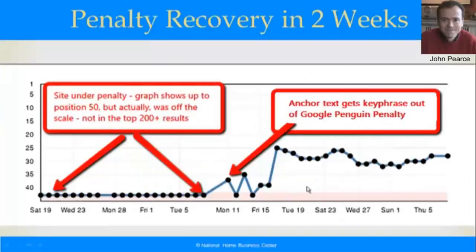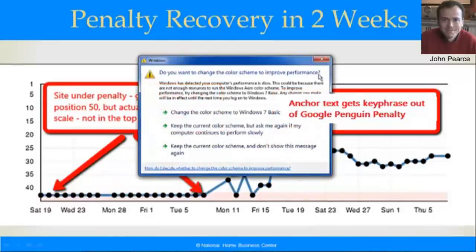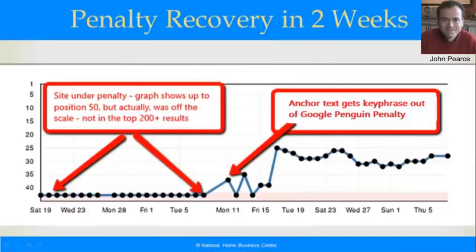Going back to this graph, that's exactly what we did. He was in penalty for having a poor Anchor Text balance — he had promoted his main keyword too much. We were able to do a single campaign to our particular network, which we're going to talk a lot more about on our webinar training. And in just two weeks, we popped him out of penalty and he's ready for ranking on page one with another push.